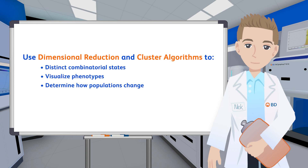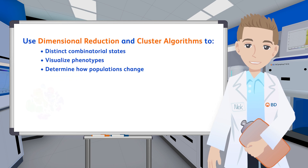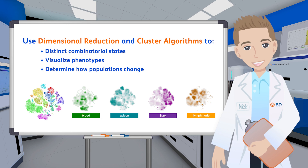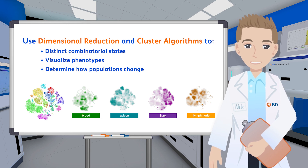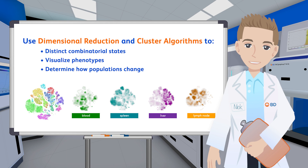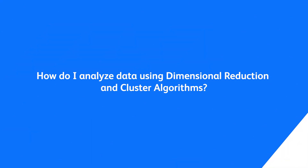The use of dimensional reduction and clustering algorithms offers a non-biased and objective summary of distinct combinatorial states where phenotypes can be visualized and population changes determined. So how do I analyze my data using dimensional reduction and clustering algorithms?